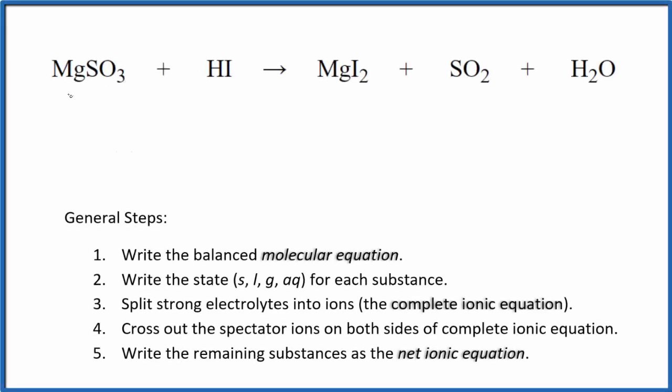Let's write the balanced net ionic equation for MgSO3 plus HI. This is magnesium sulfite plus hydroiodic acid.